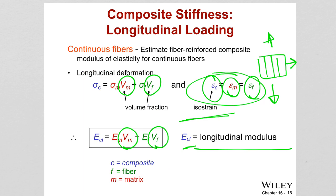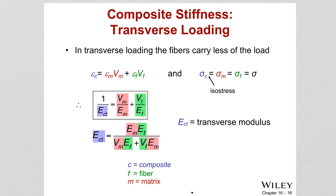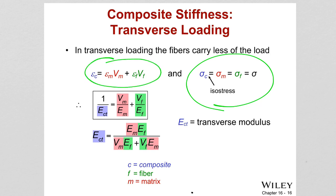In transverse loading — where load is applied at 90 degrees to the direction of fiber alignment — stresses (not strains) in the two components are equal. In this case, with the composite deformation also depending on volume fractions, equations for the modulus can be derived. I won't go into the derivation, but you can see the final equation for how we calculate the modulus of the composite in transverse direction.